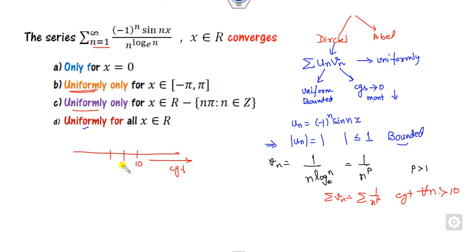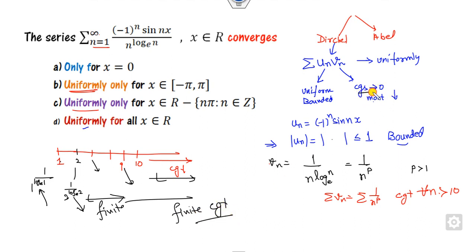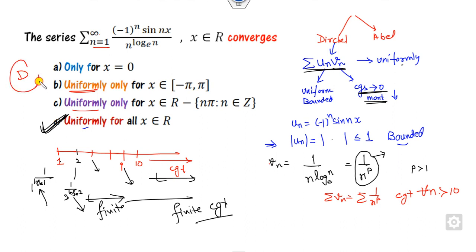For the previous values n equals 1 through 9, v_n takes finite values such as 1 upon 2 log e 2 and so on — these are all finite. So these finitely many terms are all finite and convergent. Combined with the convergence from n greater than or equal to 10, the entire series converges to 0. You can also verify that this is a monotonically decreasing sequence, so that property is satisfied. Therefore the series converges uniformly for all x belonging to the reals, and the right answer is D.